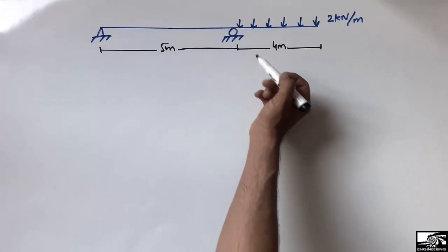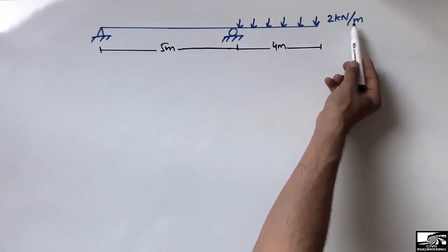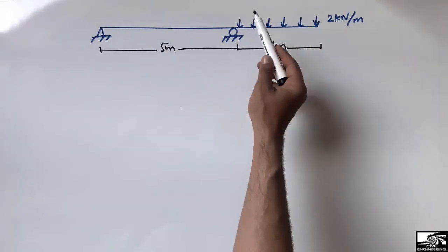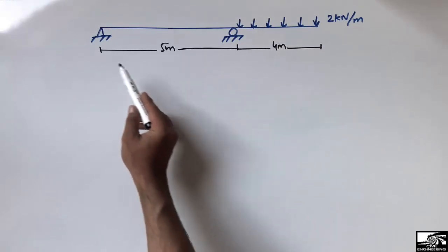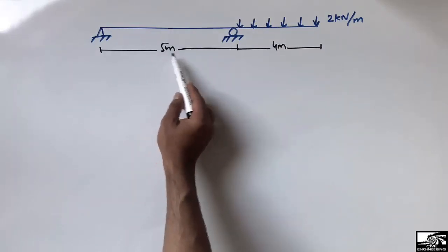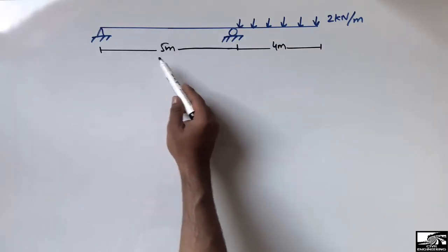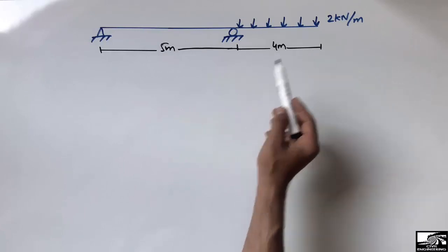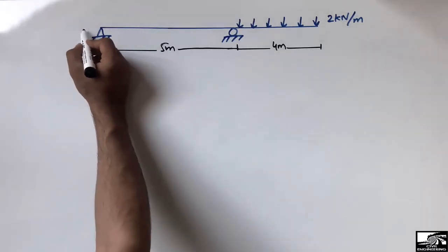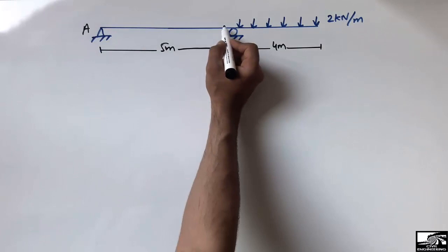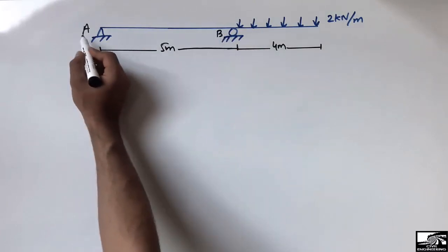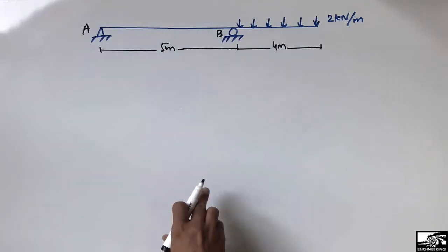A load of 2 kilonewton per meter is applied on the hanging portion of the beam. The total length of the beam is 9 meters — 5 meters without load and 4 meters with the uniformly distributed load. We name the two supports A and B.